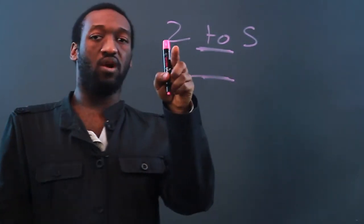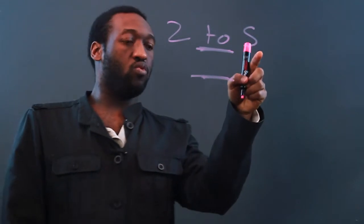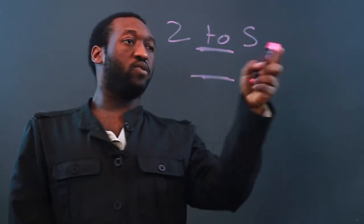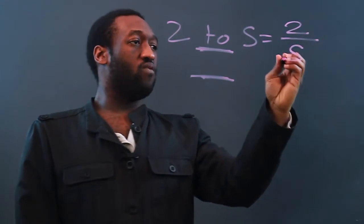Our first number will be our numerator and our second number will be our denominator. So if we write 2 to 5 as a fraction, it will be 2 over 5.